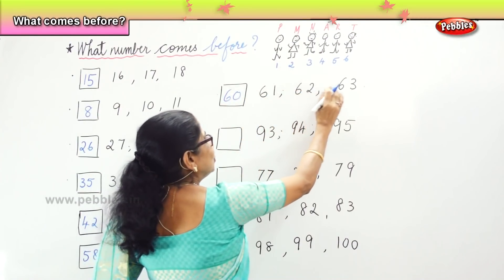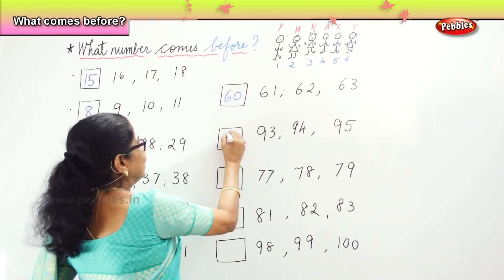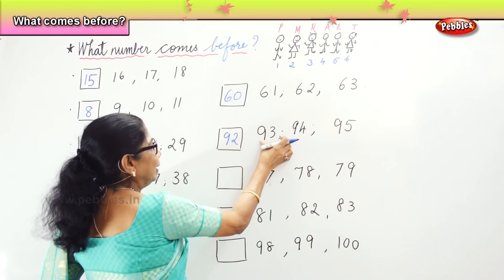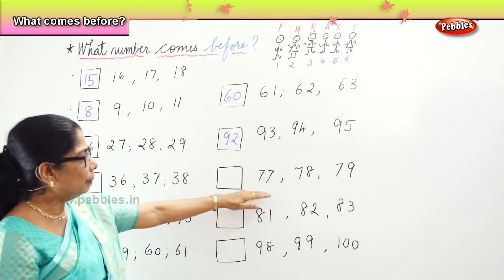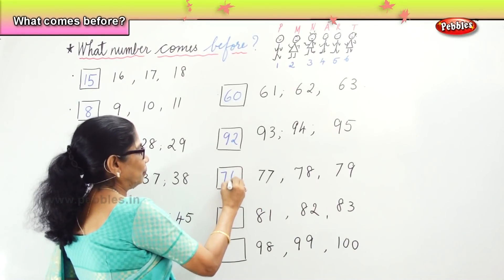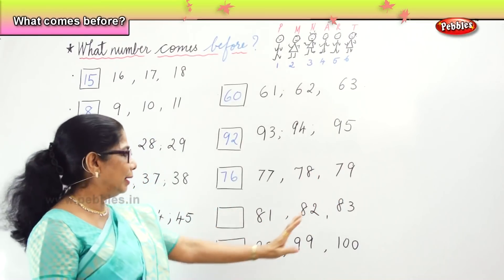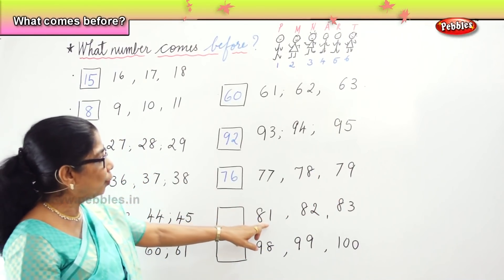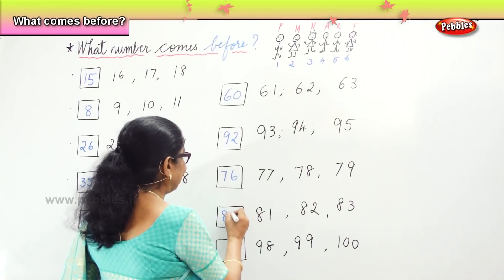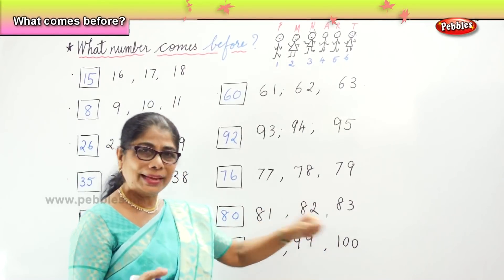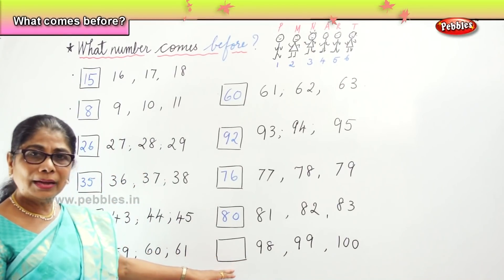Next we have 93, 94, 95 — before 3 is 2, very good: 92, 93, 94, 95. Next we have 77, 78, 79 — what number comes before 77? 76. Next: 76, 77, 78, 79. What number comes before 81? 81, 82, 83 — before 1 is 0, so 80. 80, 81, 82, 83. Last one: 98, 99, 100 — what number comes before 98? 97. Very good.